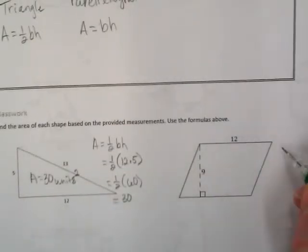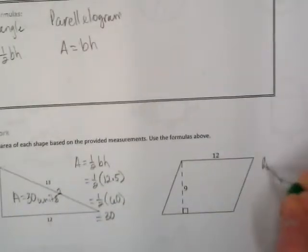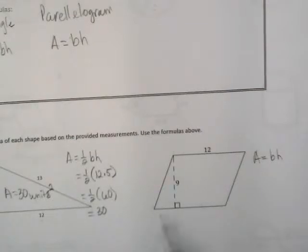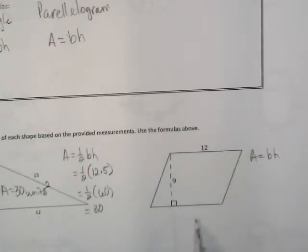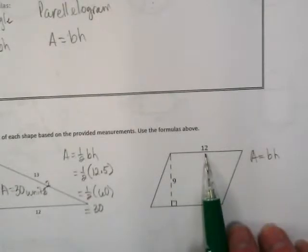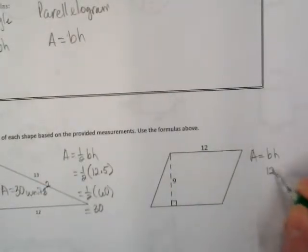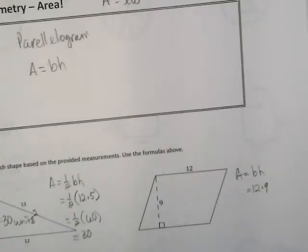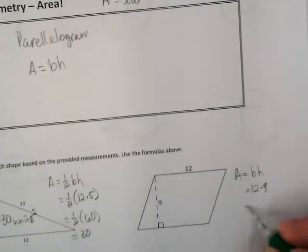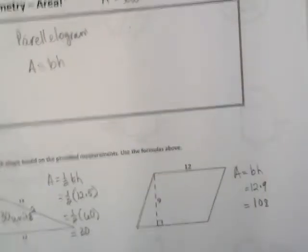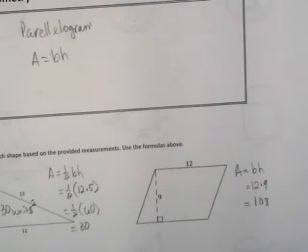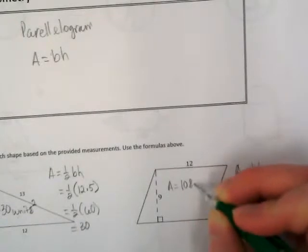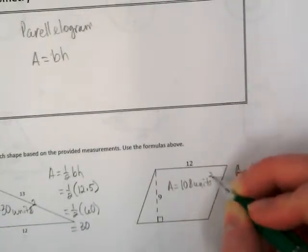Let's calculate this one. Always write your formula above where you're going to fill it in. The base is 12, from the top, and the height is 9. Twelve times 9 equals 108. You're not having to divide anything, just taking the base and the height, multiplying them, and you're done. Don't forget we always want to say that it's square units.